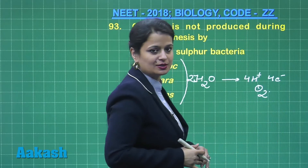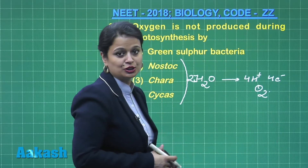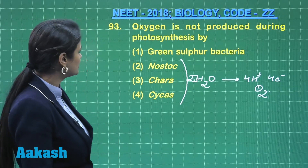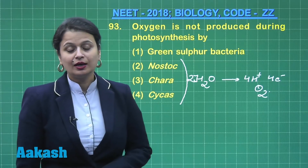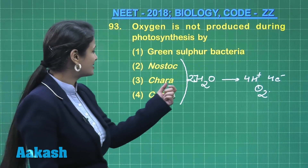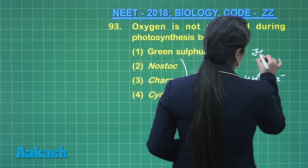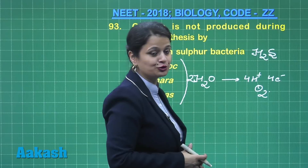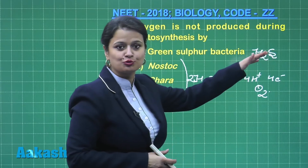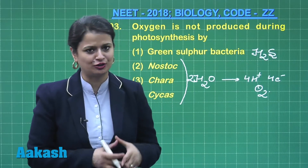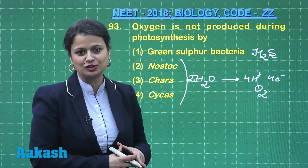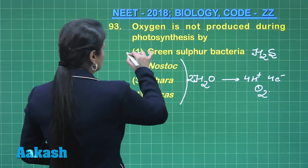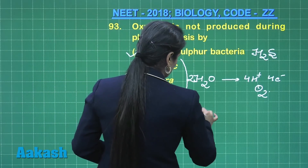During photosynthesis, they produce oxygen — this is known as oxygenic photosynthesis. But in green sulfur bacteria, instead of H₂O, there is utilization of H₂S. H₂S provides electrons and hydrogen, so there is no production of oxygen after splitting of H₂S. This is known as anoxygenic photosynthesis. So the right answer for this question is option number 1.